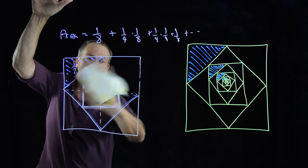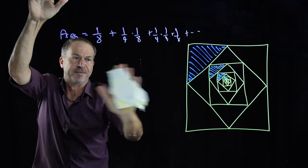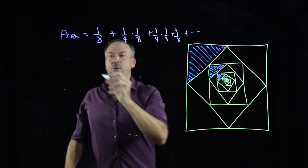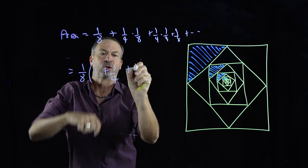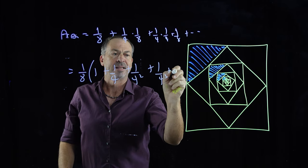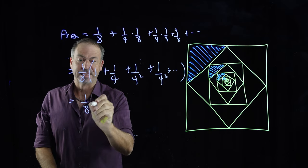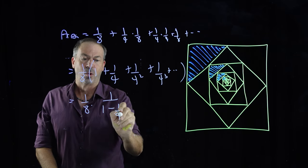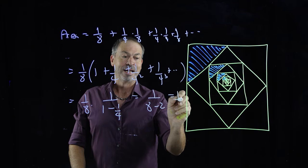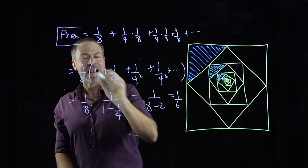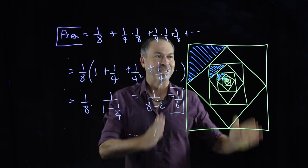Let me write this more neatly. We've got a factor of one-eighth everywhere, leaving one plus one-quarter plus one-quarter-squared plus one-quarter-cubed and so on forever. That's a geometric series! The formula gives one over one minus one-quarter — multiply the denominator through by eight and it's one over eight minus two, which is one-sixth. The area of all those blue triangles constitutes one-sixth of the total area.